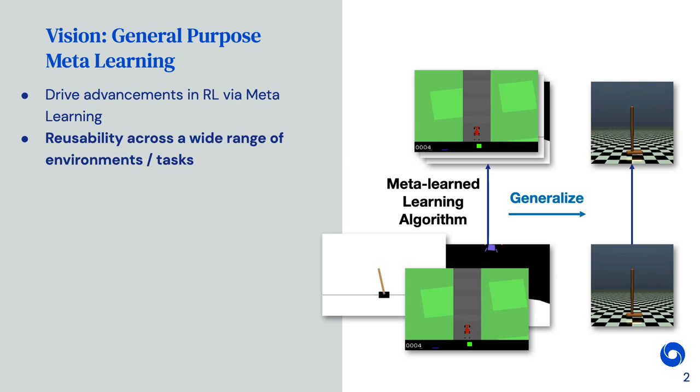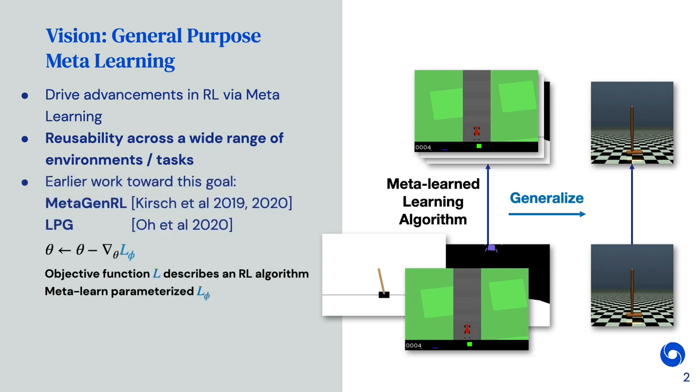Previous work on this issue in the context of RL has represented learning algorithms using parameterized objective functions. Meta-learning would then correspond to optimizing over these meta-parameters to discover novel learning algorithms. The discovered learning algorithms turned out to be quite general-purpose, but still rely on backpropagation and gradient descent.